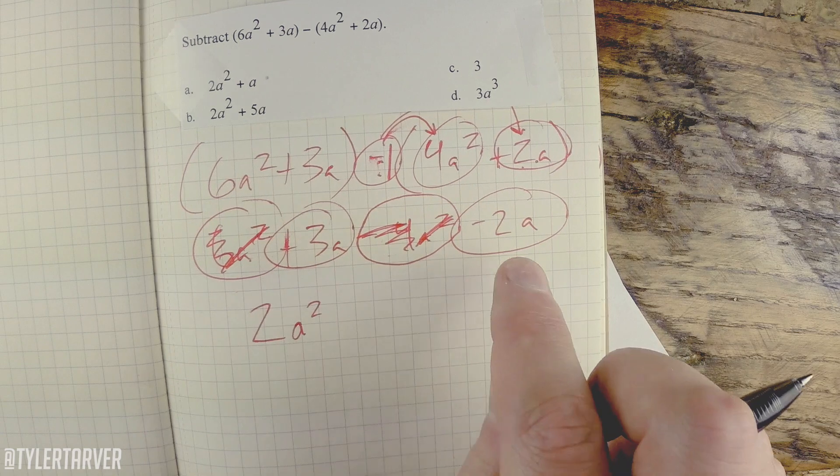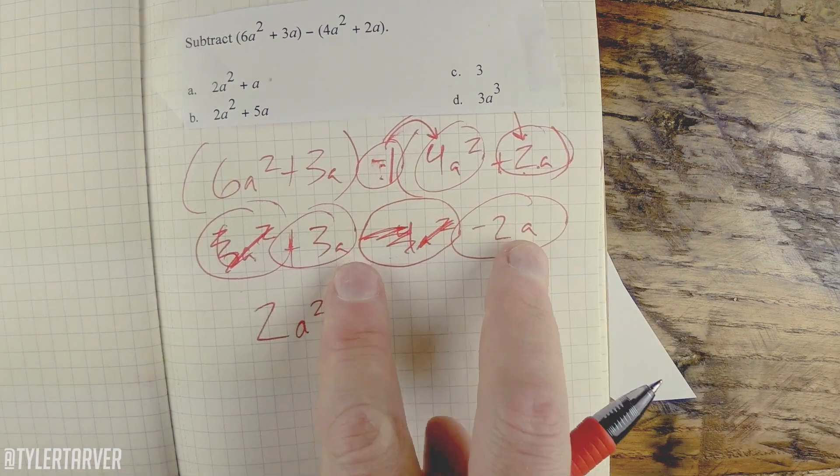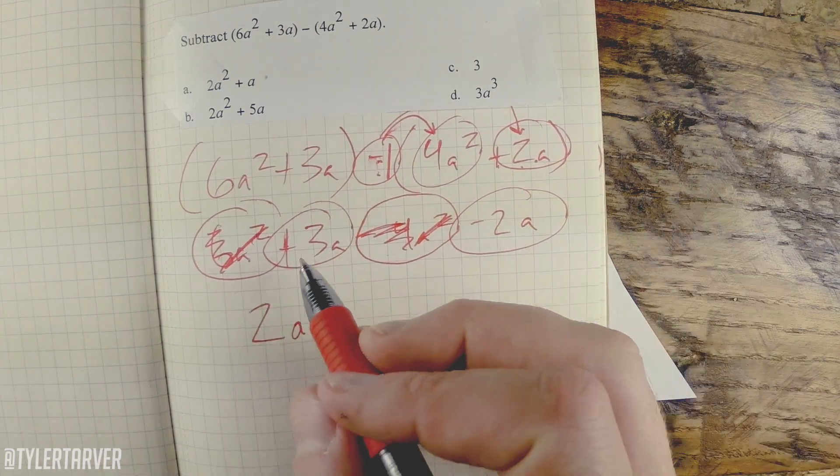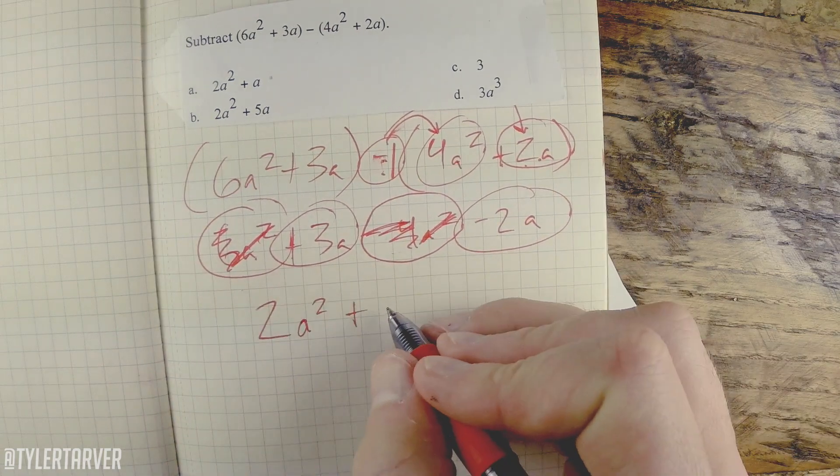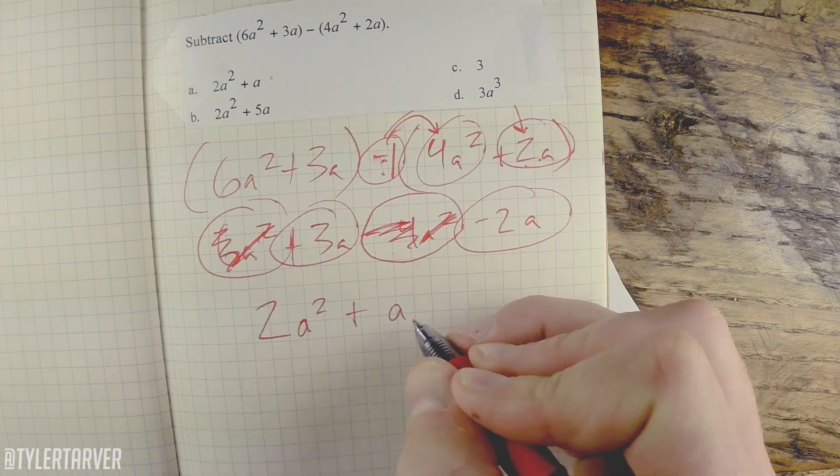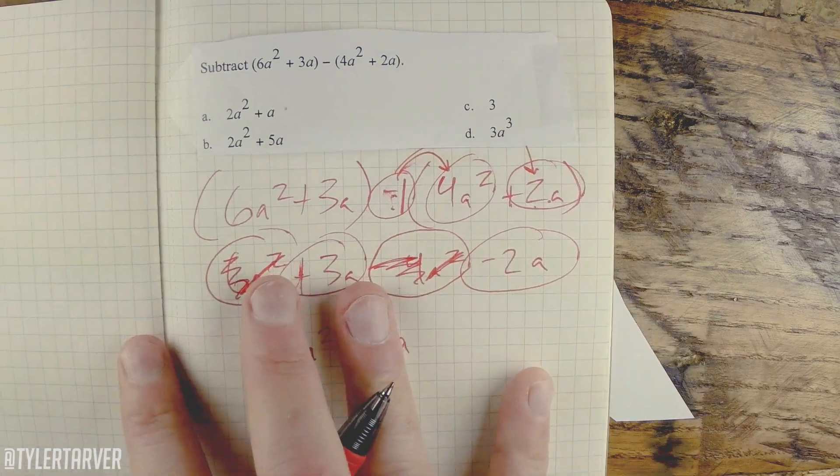All right, now let's look at our other two. We've got 3a minus 2a. They have the same variable, means we can combine them. 3 minus 2 is 1, so positive 1a. Do I need to write 1? No, because 1 times a is a. So let's look back up here.